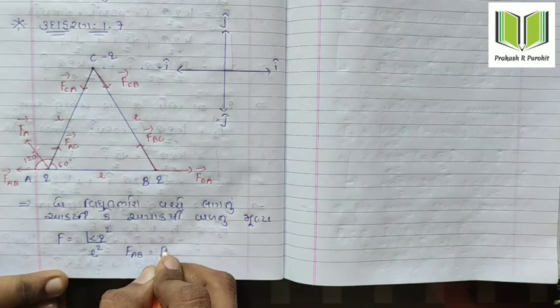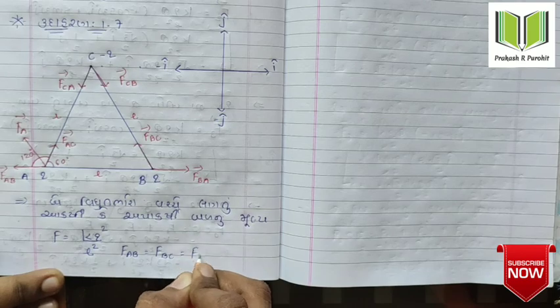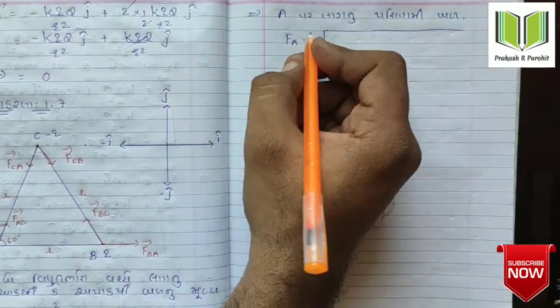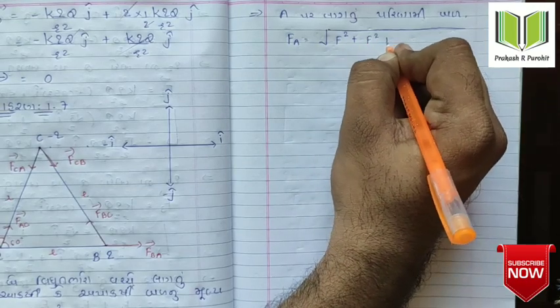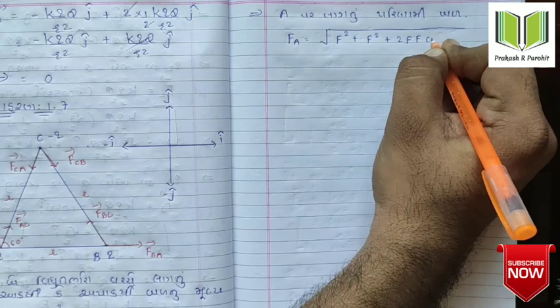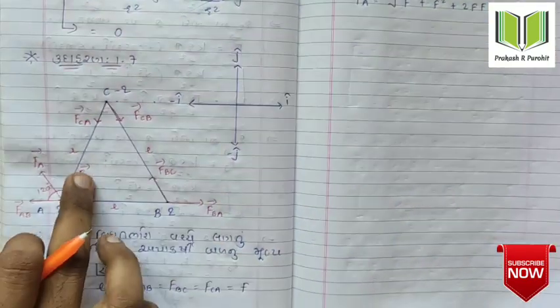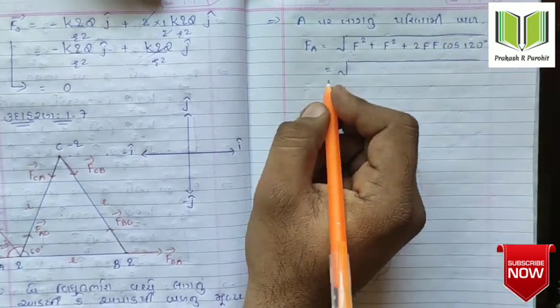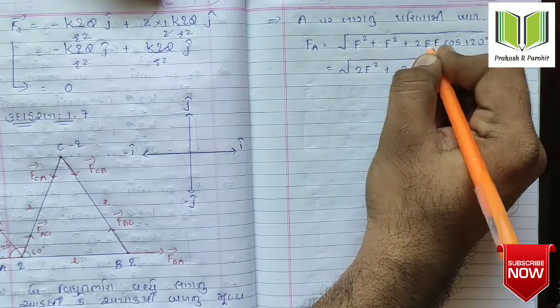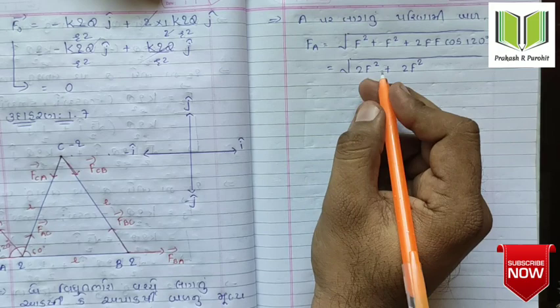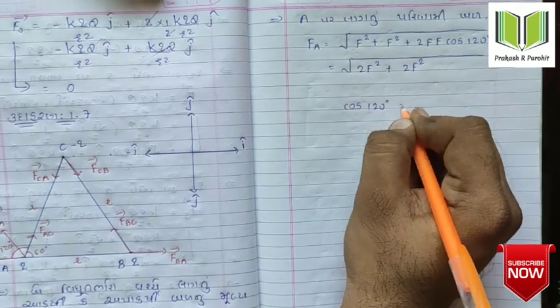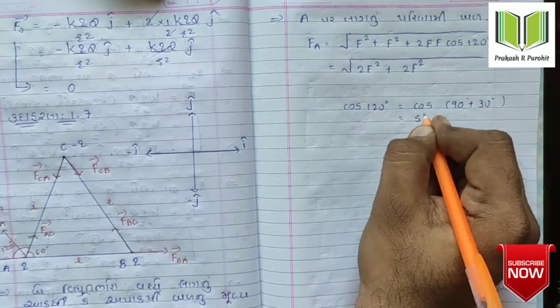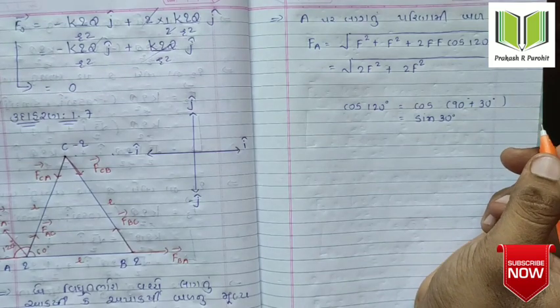If we ask for F at B, F at C, and F at A, then theta is 120 degrees. Now, F squared plus F squared plus 2F into F, F squared. Cos 120 is equal to one. Cos 120 is equal to 90 plus 30 degrees. Cos 130 is equal to the sine.